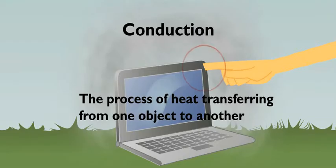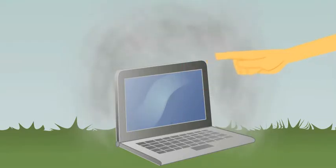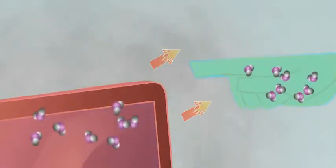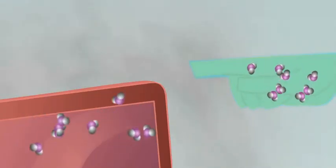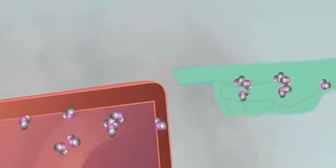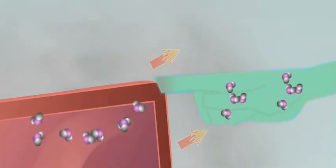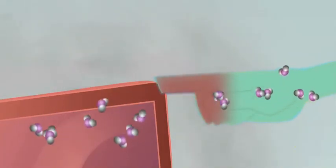So conduction transfers heat between things that touch. Yep. When conduction happens, heat is always transferred from the hot to the cool object. The particles in the hot object are moving faster than those in the cold object. When the objects touch, the cooler object's particles get pushed and start moving faster, and it warms up.